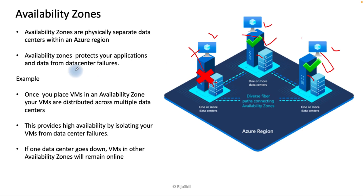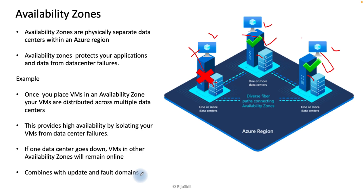Each Availability Zone has its own update domain and fault domain. The update domain handles software isolation and the fault domain handles hardware isolation. I have described these in detail in my previous video, which I'll put in the description.